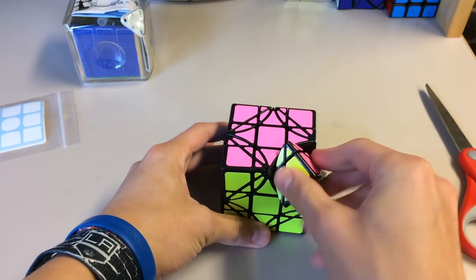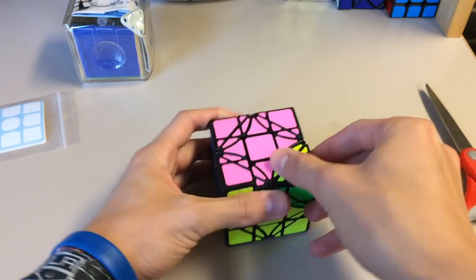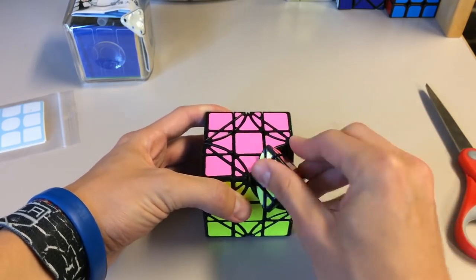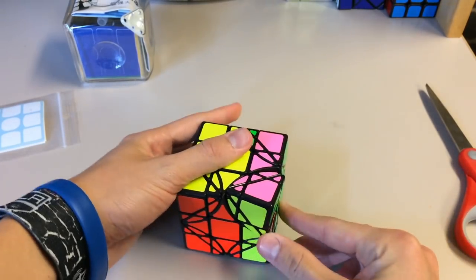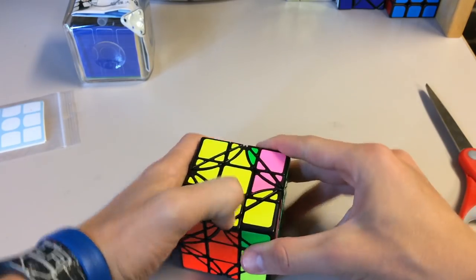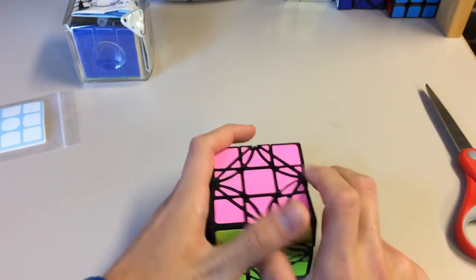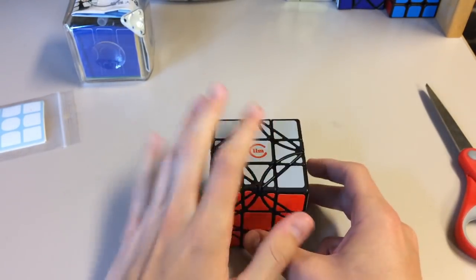But anyways, I think it's because of this. Now this turns pretty smoothly, a lot smoother than I was expecting. So I could turn it like that and then scramble it up like that. So that's how you scramble up this cube. And this cube can never be bandaged, which is really cool.